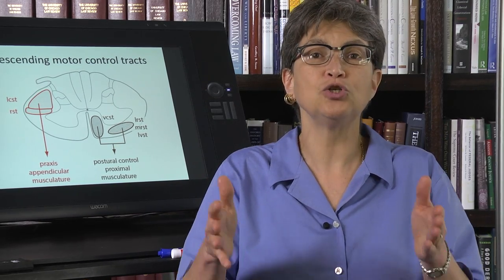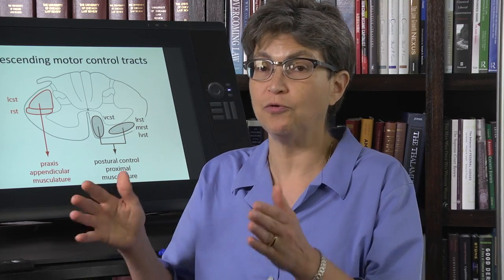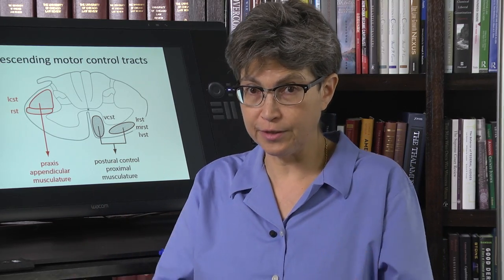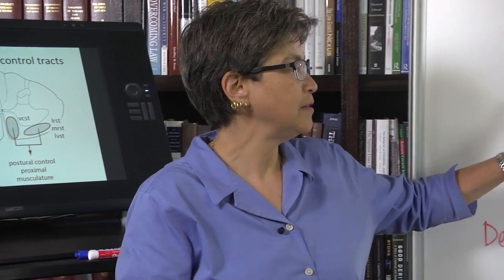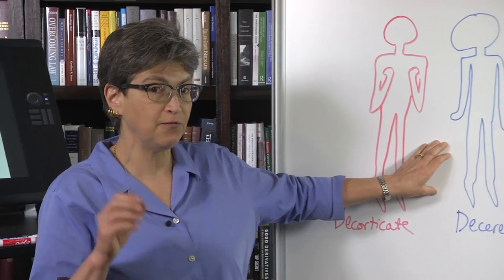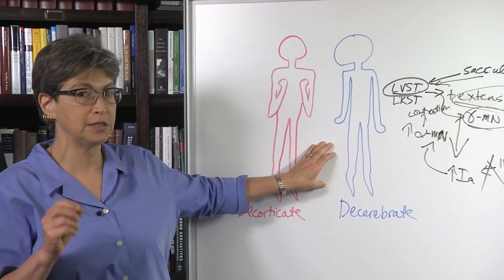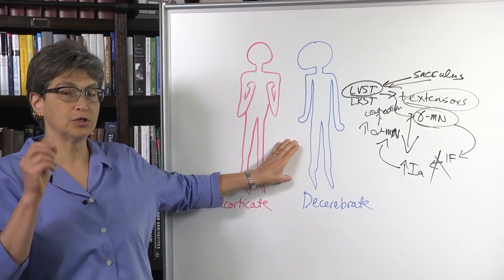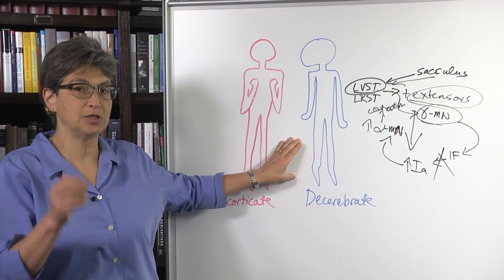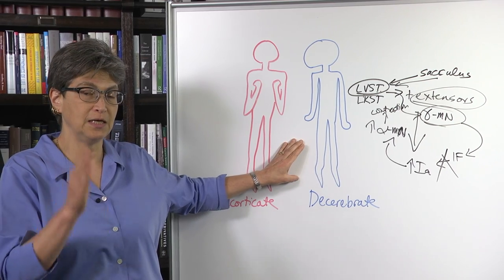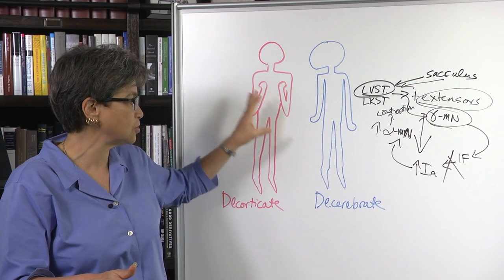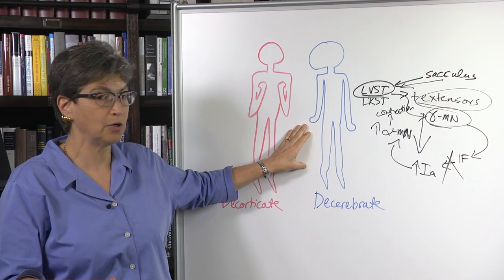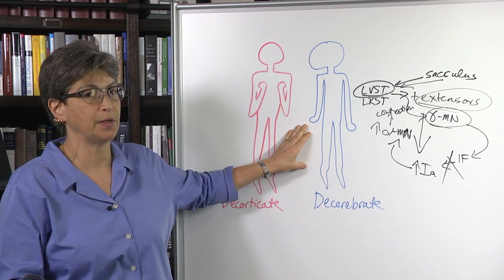The other thing to remember is that these postures, these fixed postures, the decorticate and decerebrate postures are signs of damage to specific sites in the brainstem to the rostral midbrain in the case of decorticate posture and to the caudal midbrain or pons in the case of a decerebrate posture.